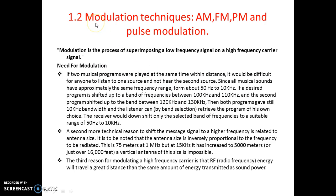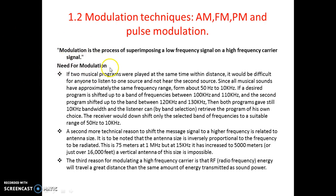In order to transmit signals, we use different modulation techniques such as AM (amplitude modulation), FM (frequency modulation), and PM (phase modulation). Modulation is a process of superimposing a low-frequency signal on a high-frequency carrier. In other words, to transmit low-frequency signals, they must be superimposed on a very high-frequency carrier signal so that information can be transferred from one point to another.